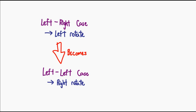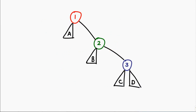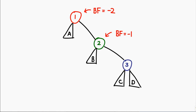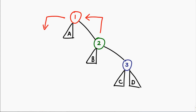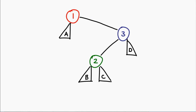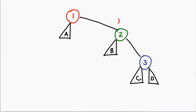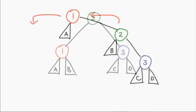The two remaining cases are simply mirror images of the two we've just discussed. The right-right case has a balance factor of negative 2 at the top, meaning the node is right-heavy, and the right-child node has a balance factor of negative 1, meaning it too is right-heavy. We perform a left rotation to fix this and the tree is balanced. The right-left case has a balance factor of negative 2 at the top and positive 1 in its right child. We reduce this to the right-right case by performing a right rotation on the right-child node, then a left rotation on the topmost node balances everything.